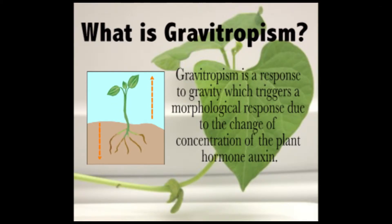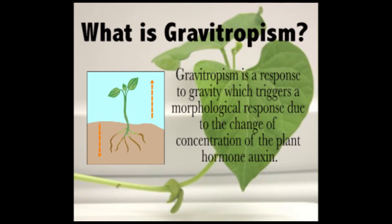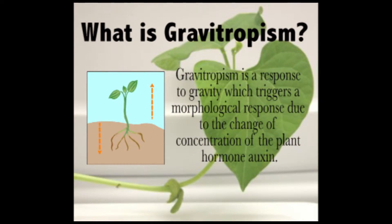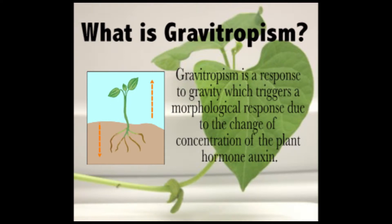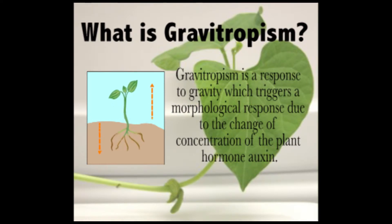Gravitropism is a morphological plant response to gravity. For plant roots this is called positive gravitropism, while in shoots this is called negative gravitropism. Shoots and roots detect changes in gravity by the sedimentation of amyloplasts in the statocyte gravity sensing cells. However, the areas of detection and subsequent responses are different in the shoot and root. This sedimentation is important in the hormonal response of auxin, a plant hormone whose accumulation results in developmental patterning.